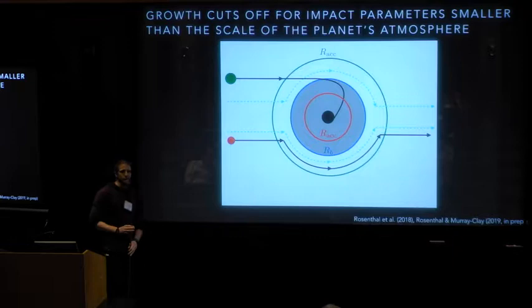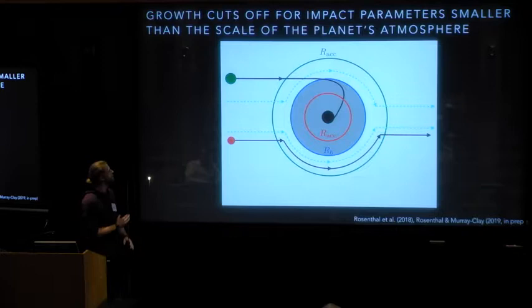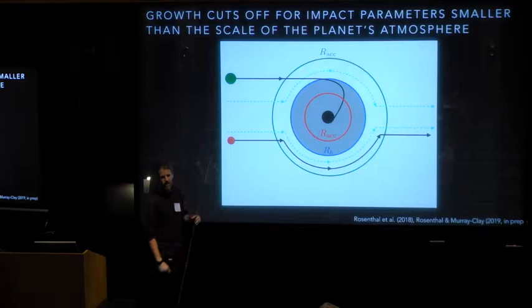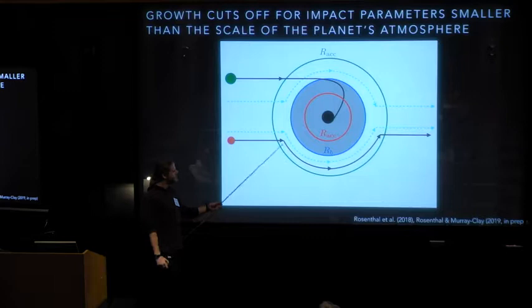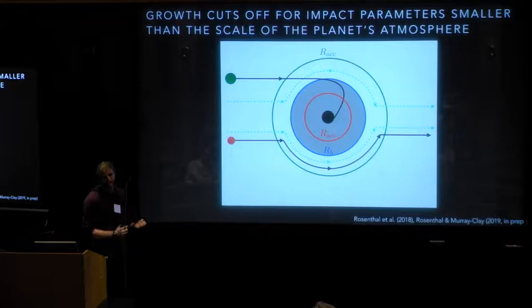And why that ties into pebble accretion is that the impact parameter for accretion in pebble accretion is strongly dependent on the size of particle you're accreting here. So what I'm showing here is a very cartoon picture of a core accreting two different sizes of particles. In green, we have a larger particle whose impact parameter is larger than the scale of the core's atmosphere. And then in red, we have a smaller particle whose impact parameter for accretion is inside the scale of the core's atmosphere. So because the particle needs to dissipate its kinetic energy, what's going to happen to this red particle is it's going to come in and try to dissipate its kinetic energy relative to the core. But on this length scale, it's going to become coupled to the gas. So instead of being able to penetrate inwards where it would be bound, it wants to follow the flow of gas and will be pulled around the core's atmosphere, not allowing it to accrete.